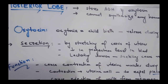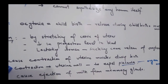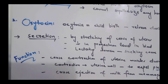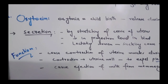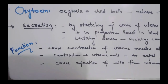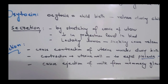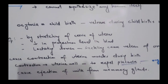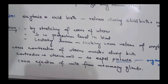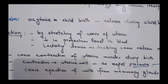What is the function of oxytocin? It causes the contraction of uterine muscles during birth. Another function is to help control and expel the placenta. The placenta is an organ which provides oxygen and nutrients to the baby, and oxytocin causes contraction of the uterine wall to deliver it.